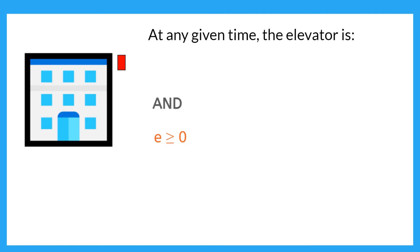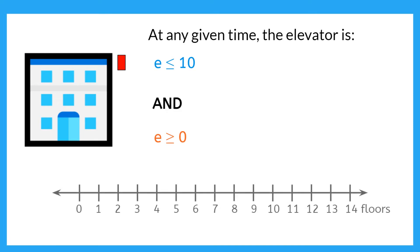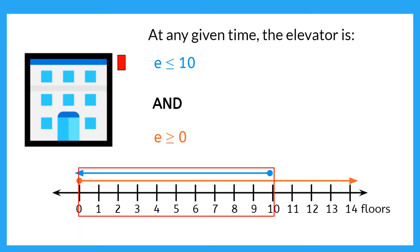So if we plot this compound inequality, we get out our number line and we would have a closed circle at 0 and then all of the floors above 0 would be included. And for our top inequality, we would have a closed circle at the 10th floor and all the floors below 10 would be included. So the solution to our compound AND inequality would be all the places where these two plots overlap from 0 to 10. And that includes 0 and 10. So for our compound AND inequality, we need both of our inequalities to be true at the same time.